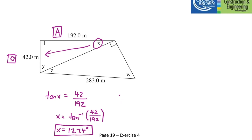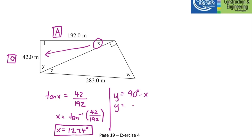For angle y, since we have a right angle, we can say y = 90 degrees minus x, saving some time. So y = 90 minus 12.34 degrees, giving 77.66 degrees.